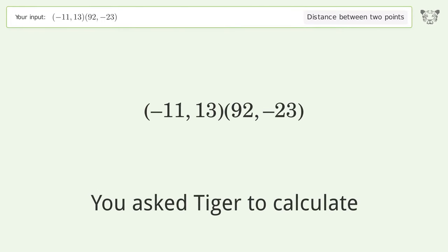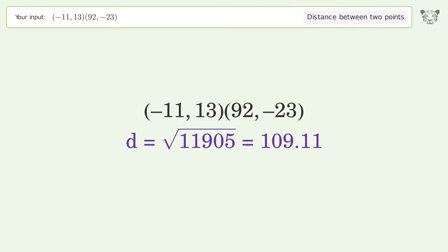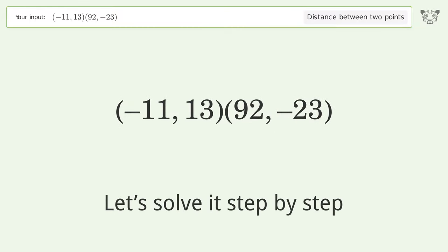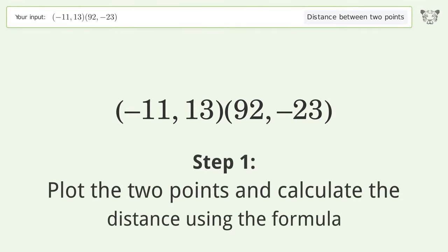You asked Tiger to calculate the distance between two points. The distance between the two points is the square root of 11905, or 109.11. Let's solve it step by step. Plot the two points and calculate the distance using the formula.